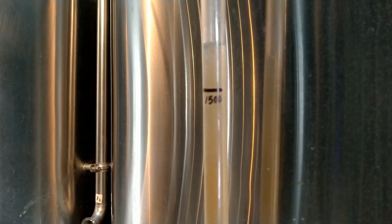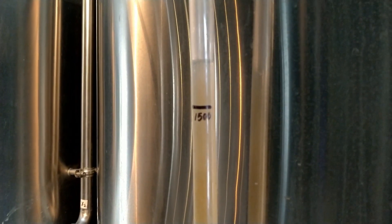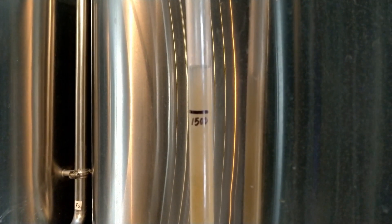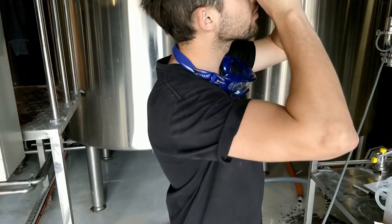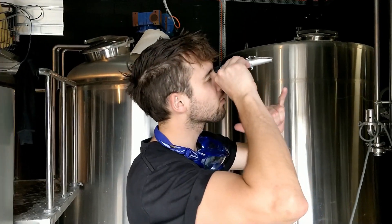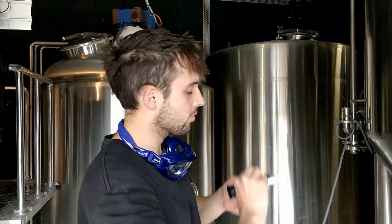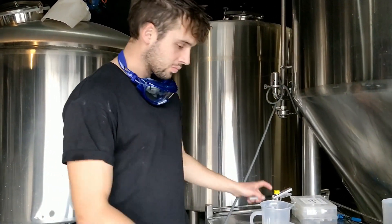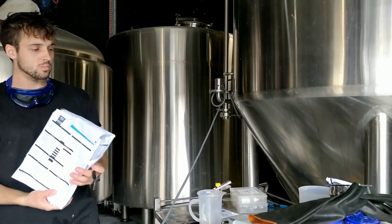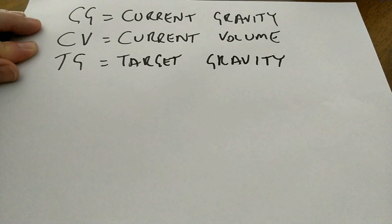Let's say I've got a hypothetical kettle with 1,500 litres — let's call it 15 hectolitres. The target gravity for this product is 1056, so we're going to call that 56 gravity points. From the sample taken in the last 5 to 10 minutes of the boil, we measured it and it came to 1060 — so we're a little bit over gravity on this particular product.